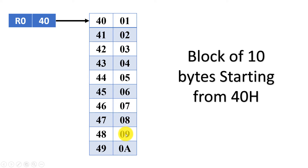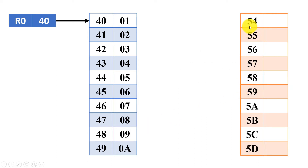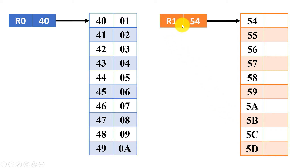We want to transfer the whole block to destination 54h — writing 01h at 54h, 02h at 55h, and so on. For the destination, we initiate a pointer stored in register R1. So one pointer for source and another for destination — that explains why there are two pointers in the 8051.